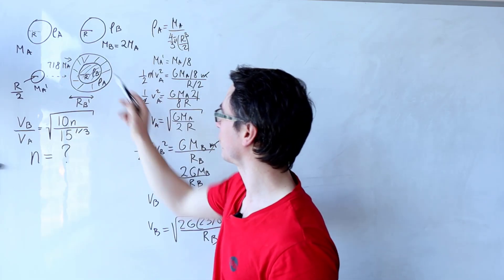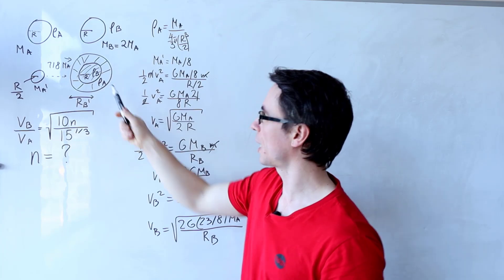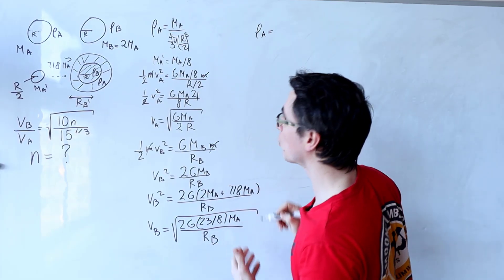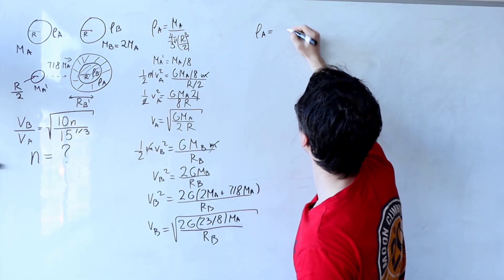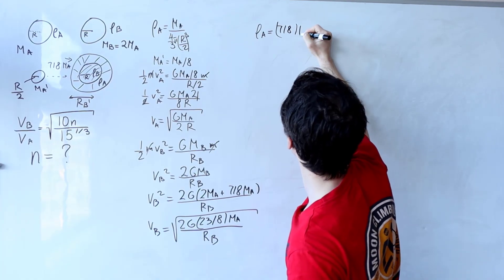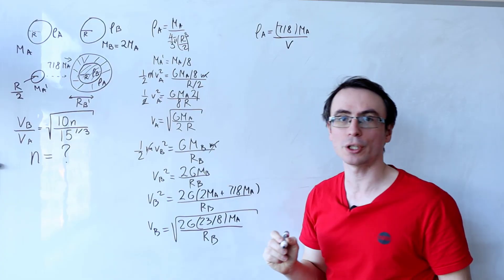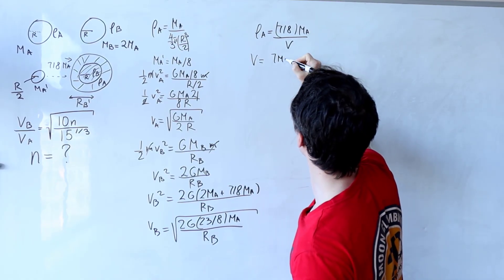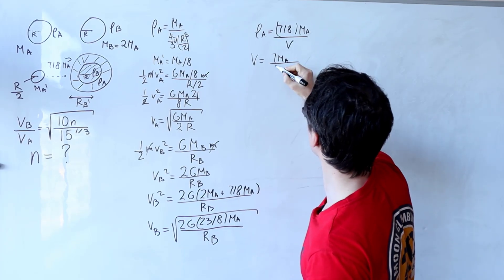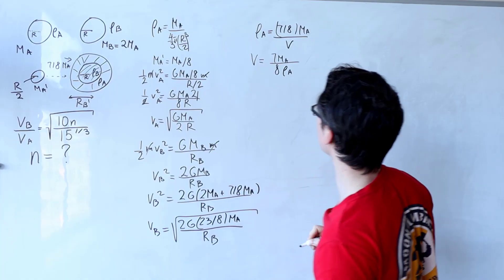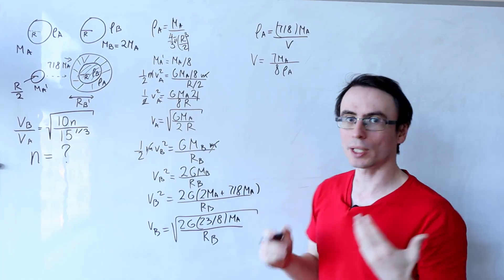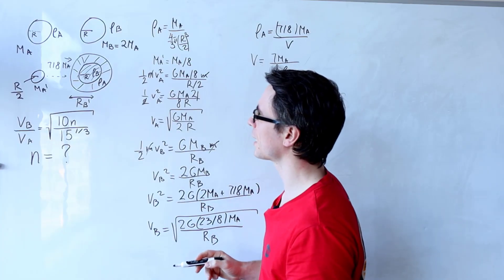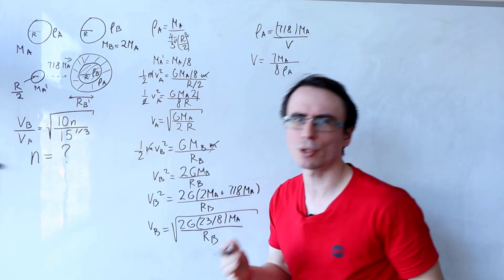The key is the spherical shell. We're given that the density of the shell remains equal to rho_a. We can write that rho_a equals the mass of the shell — which is seven-eighths·ma — divided by the volume of the shell. Rearranging, the volume of the shell equals 7·ma over 8·rho_a. The volume of the shell is the entire volume of star B minus the original volume of star B's core.